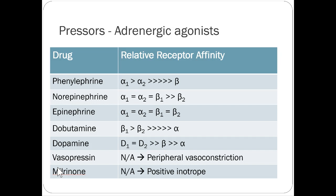Norepinephrine is often the first-line pressor. At low doses it's primarily an alpha agonist — not that different from phenylephrine — but it does have some beta activity too. The higher the drip rate, the more beta activity you get, mostly beta-1. You have to push it quite high to get beta-2 activity.